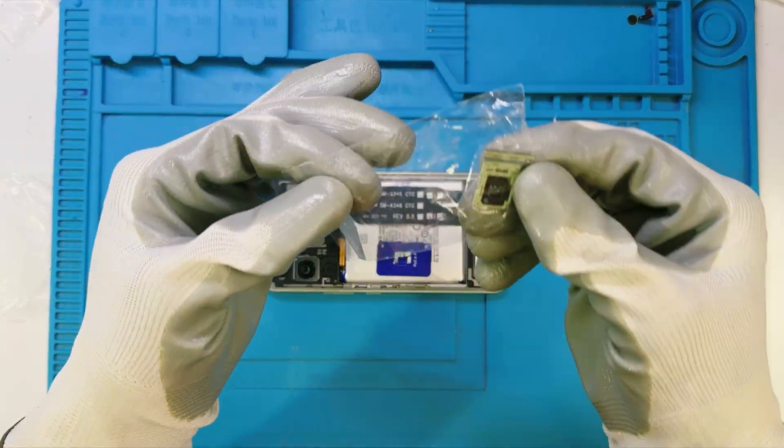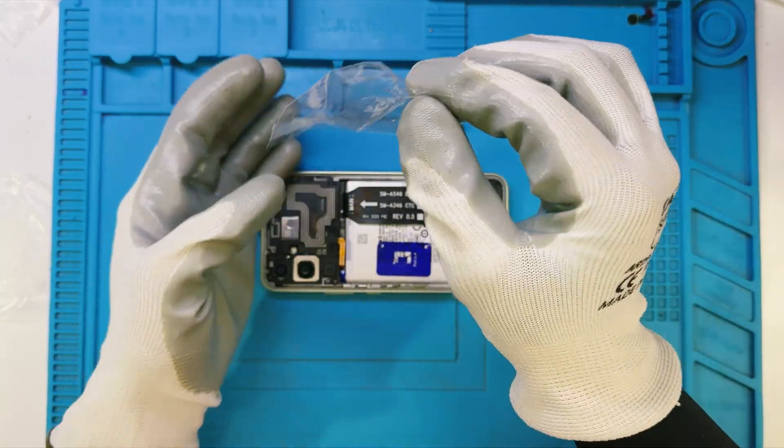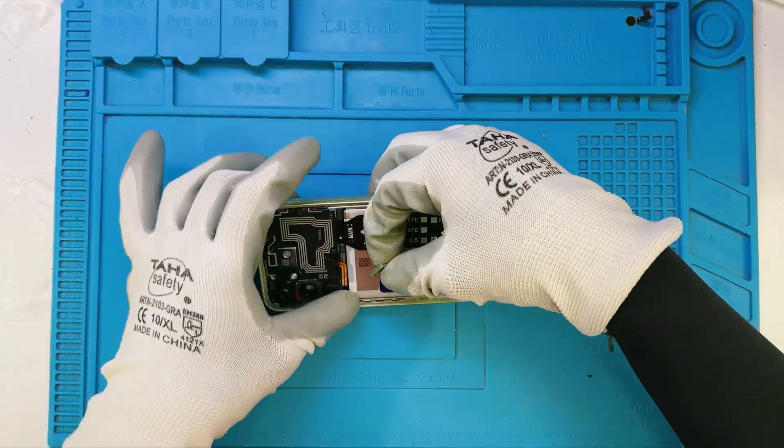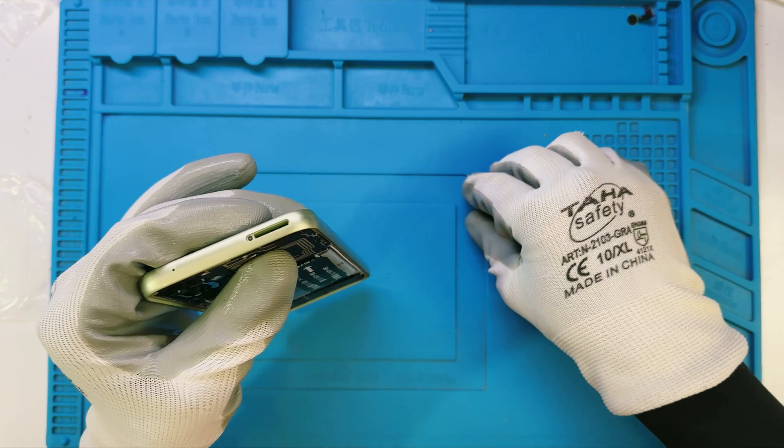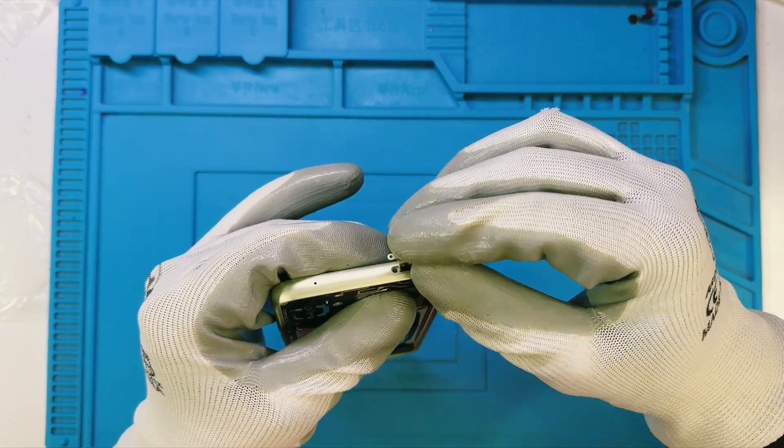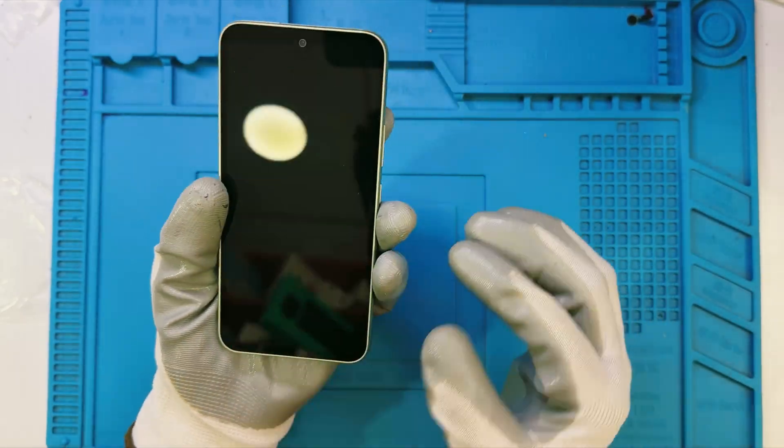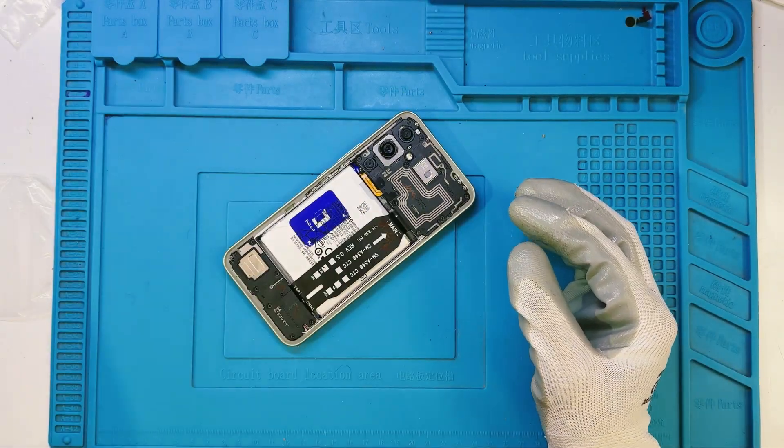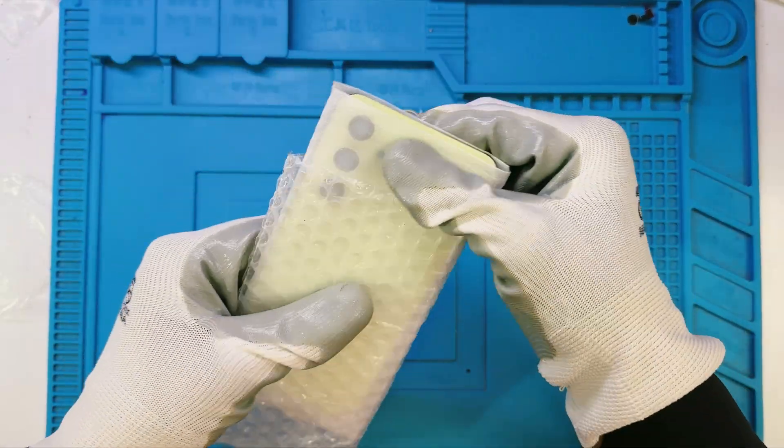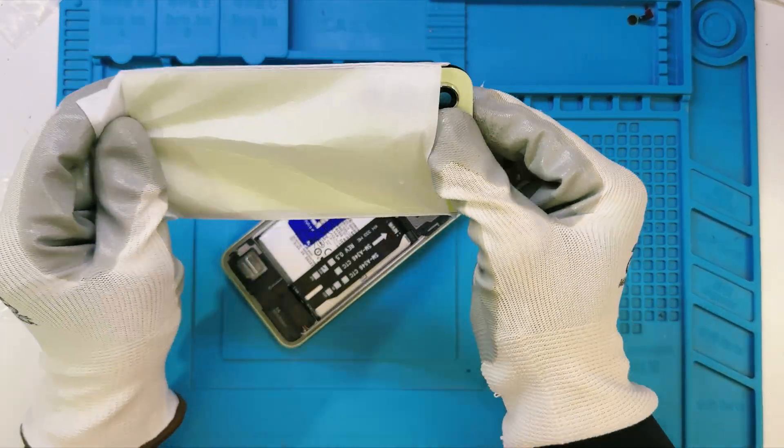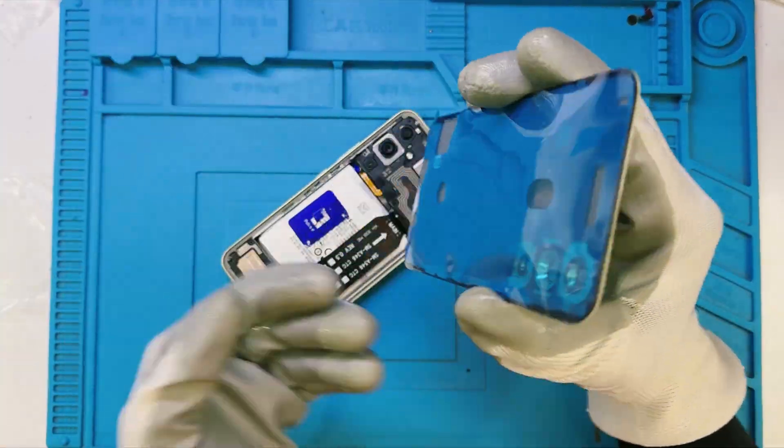I'm fixing the SIM tray into the frame. This is a quick step, but it's important to make sure the tray slides in smoothly and locks properly, so it lines up perfectly for future SIM card changes. Here's the back glass with the camera lenses installed, and our work here is almost complete. Great. The phone looks amazing now.